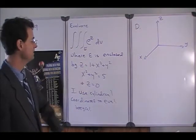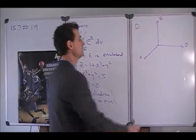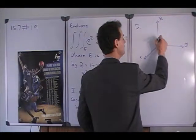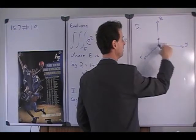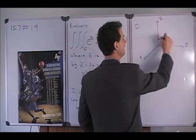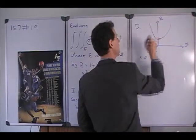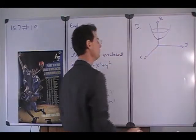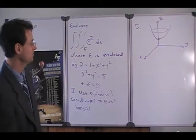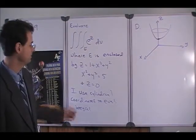So the paraboloid z equals one plus x squared plus y squared just starts at z equals one at x and y equals zero. And it's like a parabola that's been rotated about the z axis to make that paraboloid.